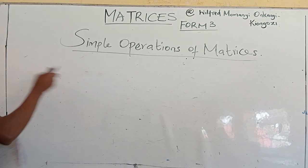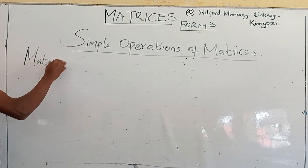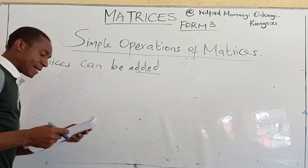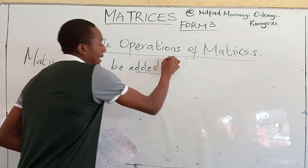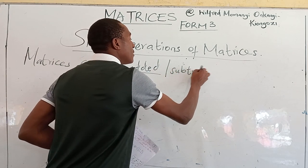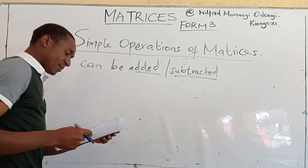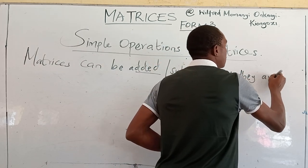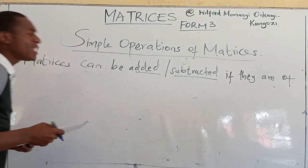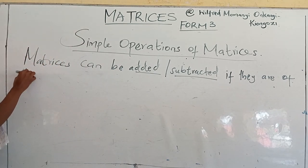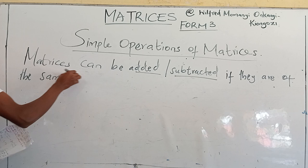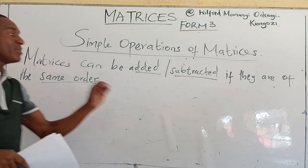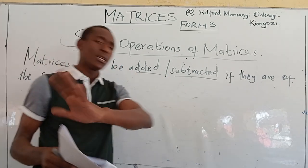Matrices can be added or subtracted if they are of the same order. So matrices of the same order are the only ones that can be added or subtracted. Multiplication and division — different case.